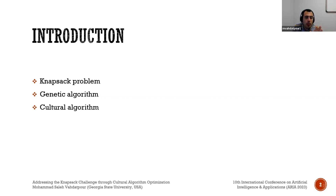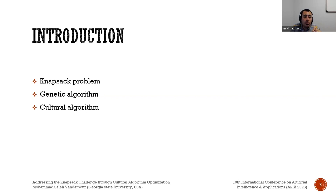Now let's delve deeper into the genetic algorithm. Genetic algorithms emulate the principles of natural selection and genetic variation, powering the way for powerful problem solving. With a track record of success across a wide spectrum of optimization challenges, the genetic algorithm is celebrated for its efficiency in navigating solution space. In our research, we explore how this algorithm adapts, evolves, and converges to an optimal solution within the context of the knapsack problem.